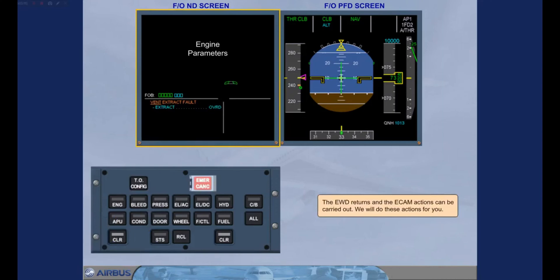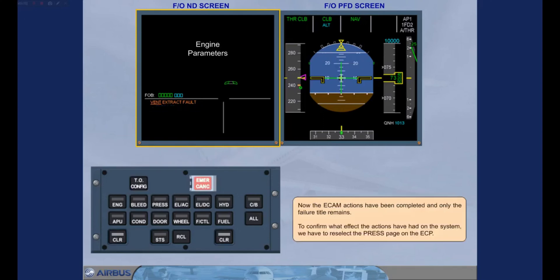The engine warning display returns and the E-CAM actions can be carried out. We will do these actions for you. The E-CAM actions have been completed and only the failure title remains. To confirm what effect the actions have had on the system, we have to reselect the PRESS page on the E-CAM control panel.